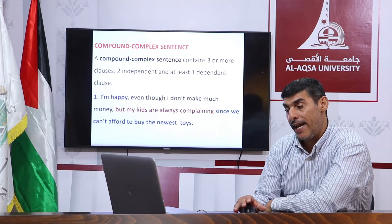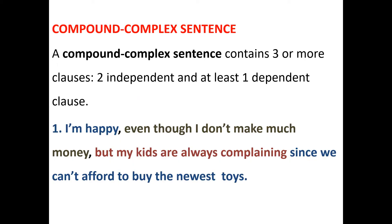Let's read the examples together. I am happy — that is a simple sentence with a single idea and a whole meaning. Even though I don't make much money — this is a subordinate clause because we have the subordinating conjunction 'even though.' But my kids are always complaining — 'but' here is a coordinating conjunction. So: I am happy, but my kids are always complaining, since we can't afford to buy the new toys. When we add the subordinate clause 'even though I don't make much money' or 'since we can't afford to buy the new toys,' it makes the sentence compound complex, because we have both a subordinating conjunction and a coordinating conjunction.